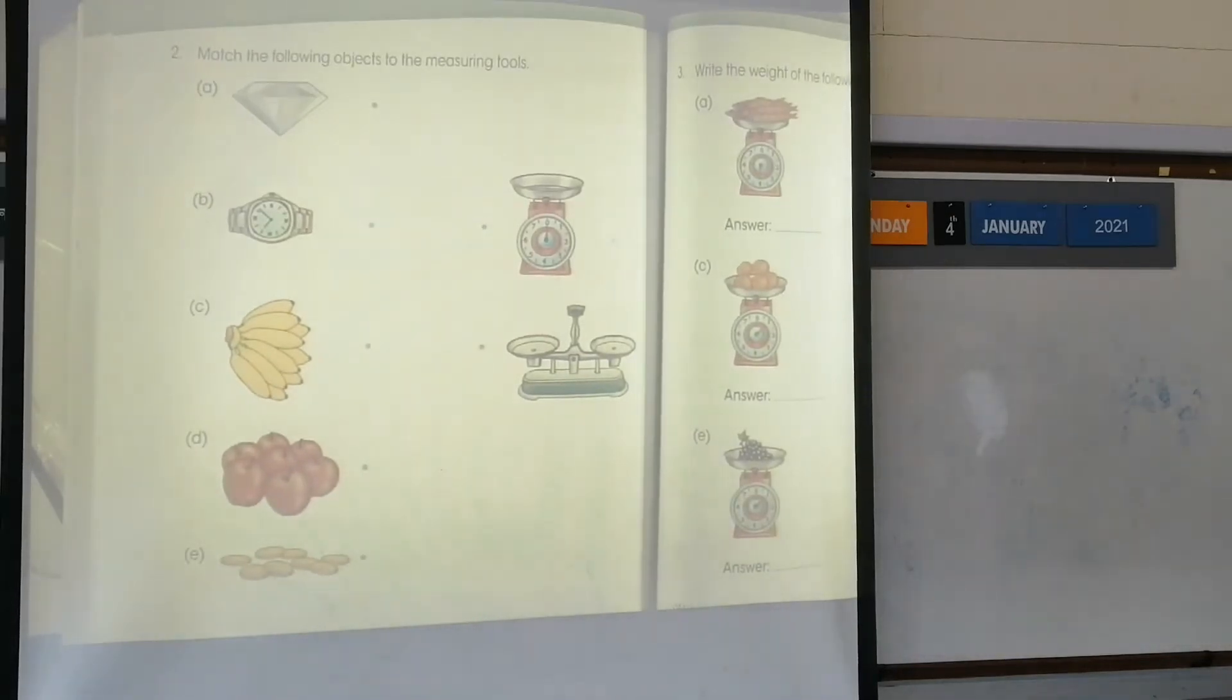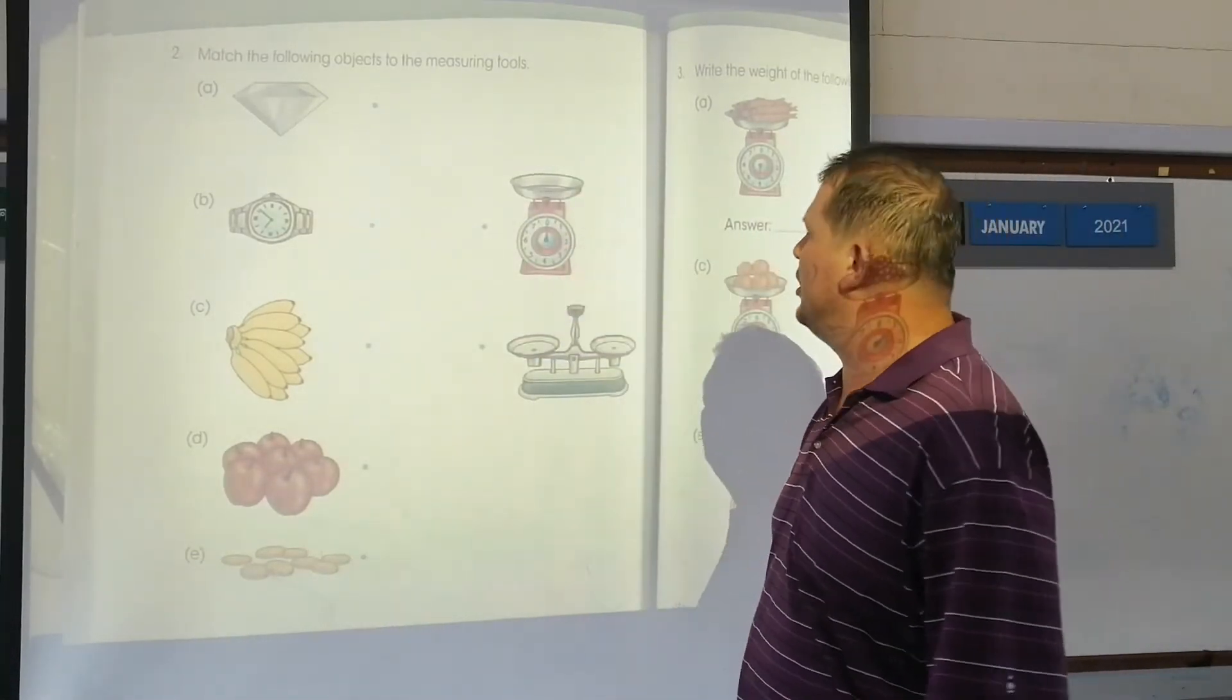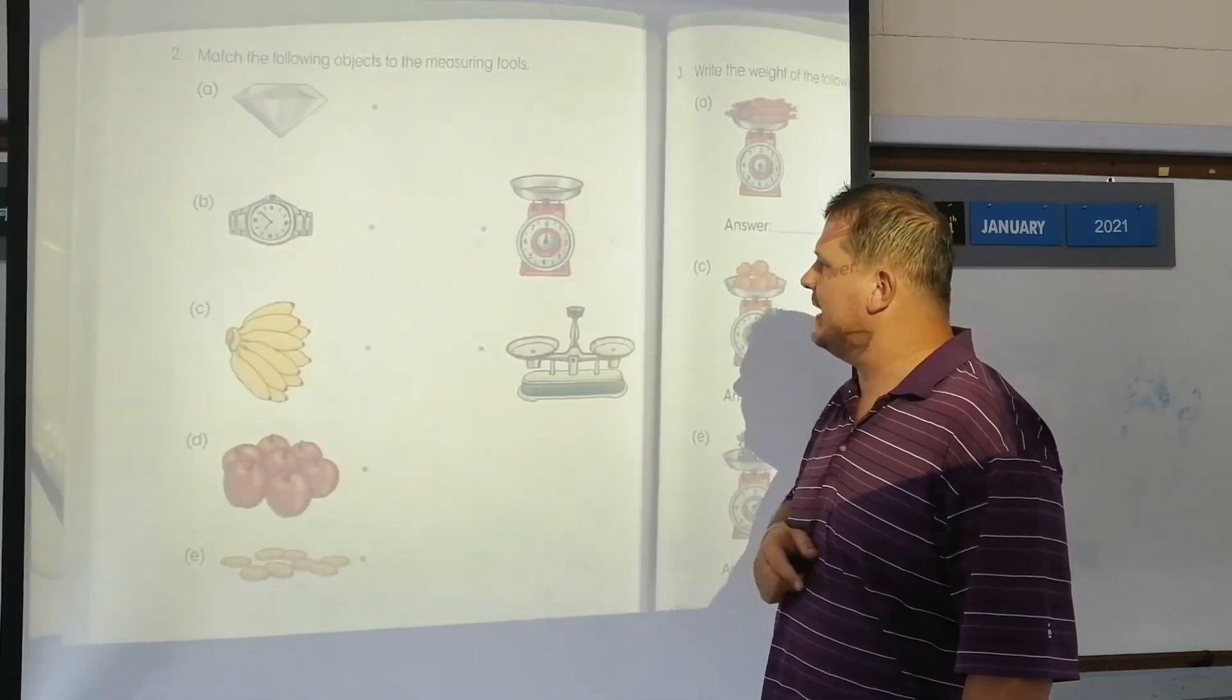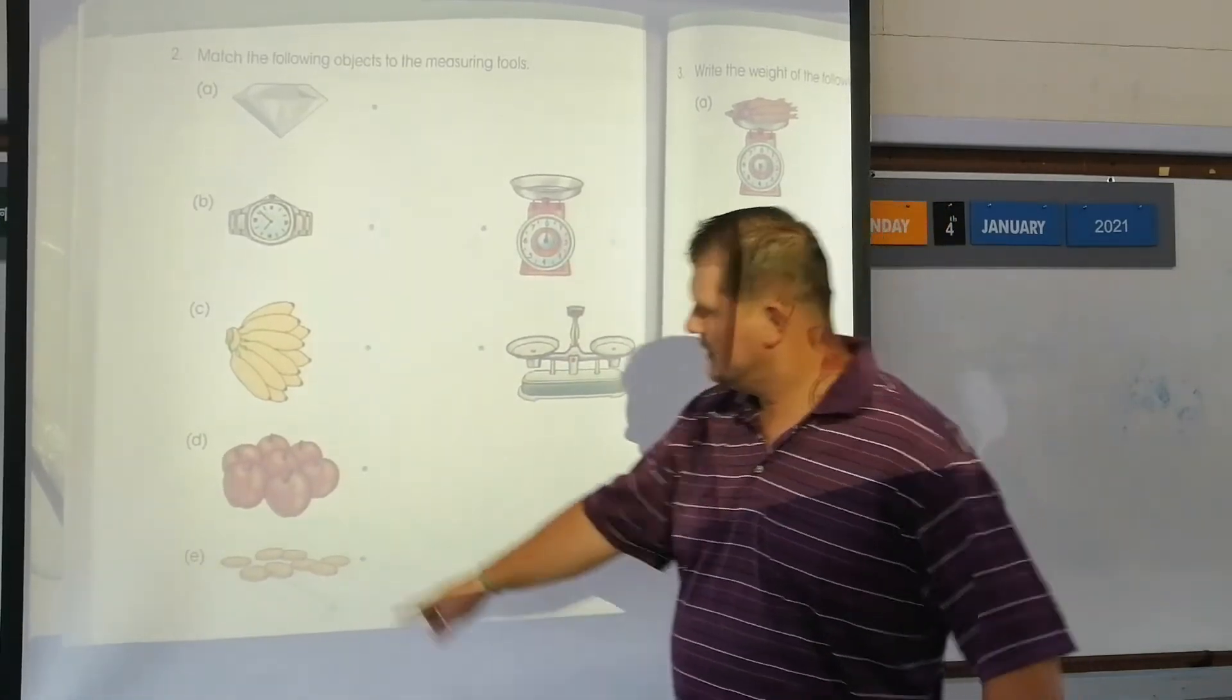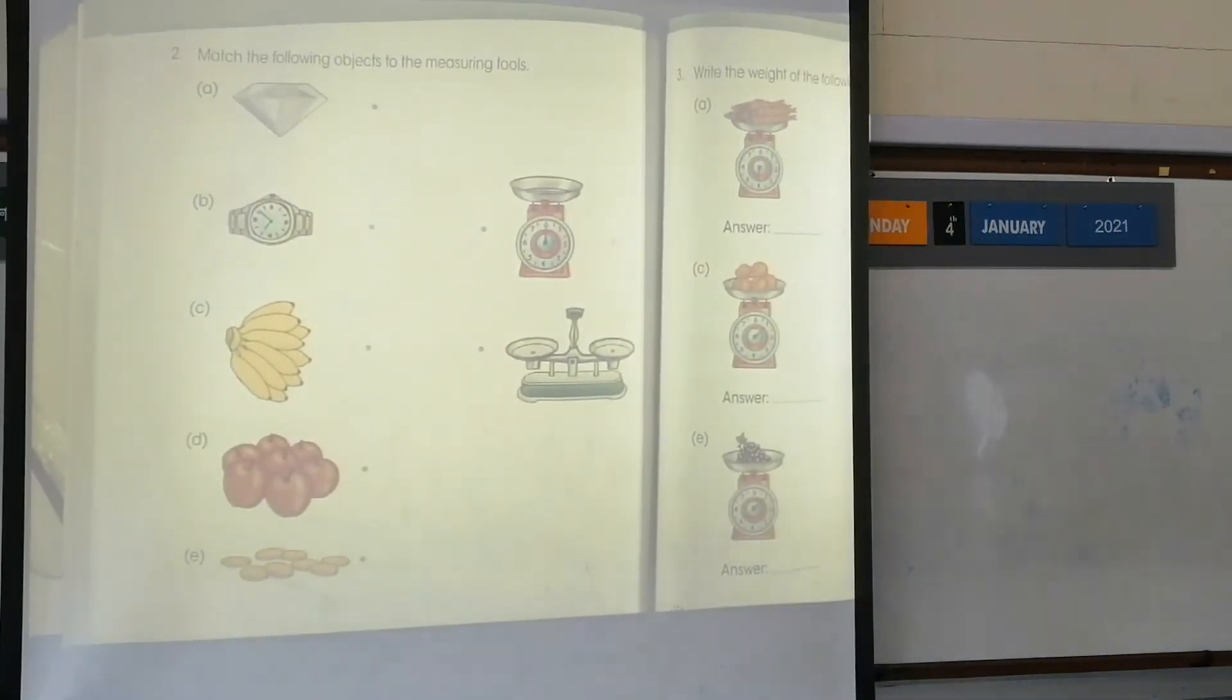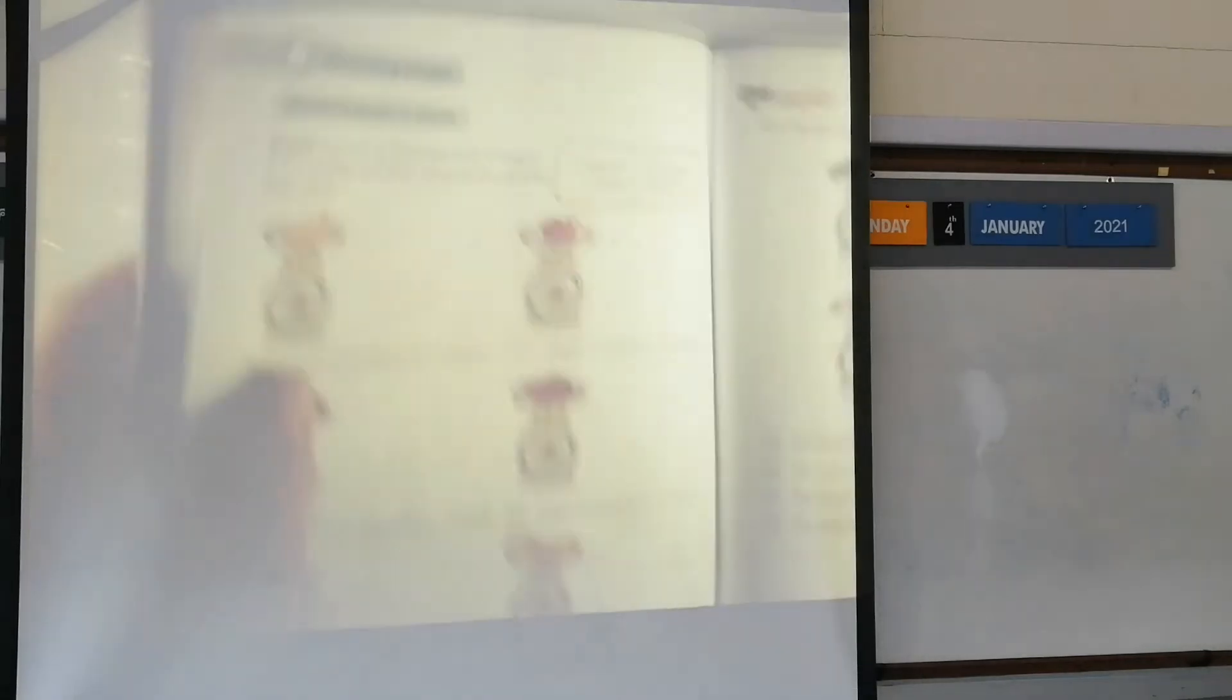It's just matching, matching each of these to which one of these two scales you use. The diamond, jewellery, we use this one. The watch, jewellery, we use this one. The bananas, we use this one. Apples, this one. These are apples. Medication, medicine, use this one. This is the next page.